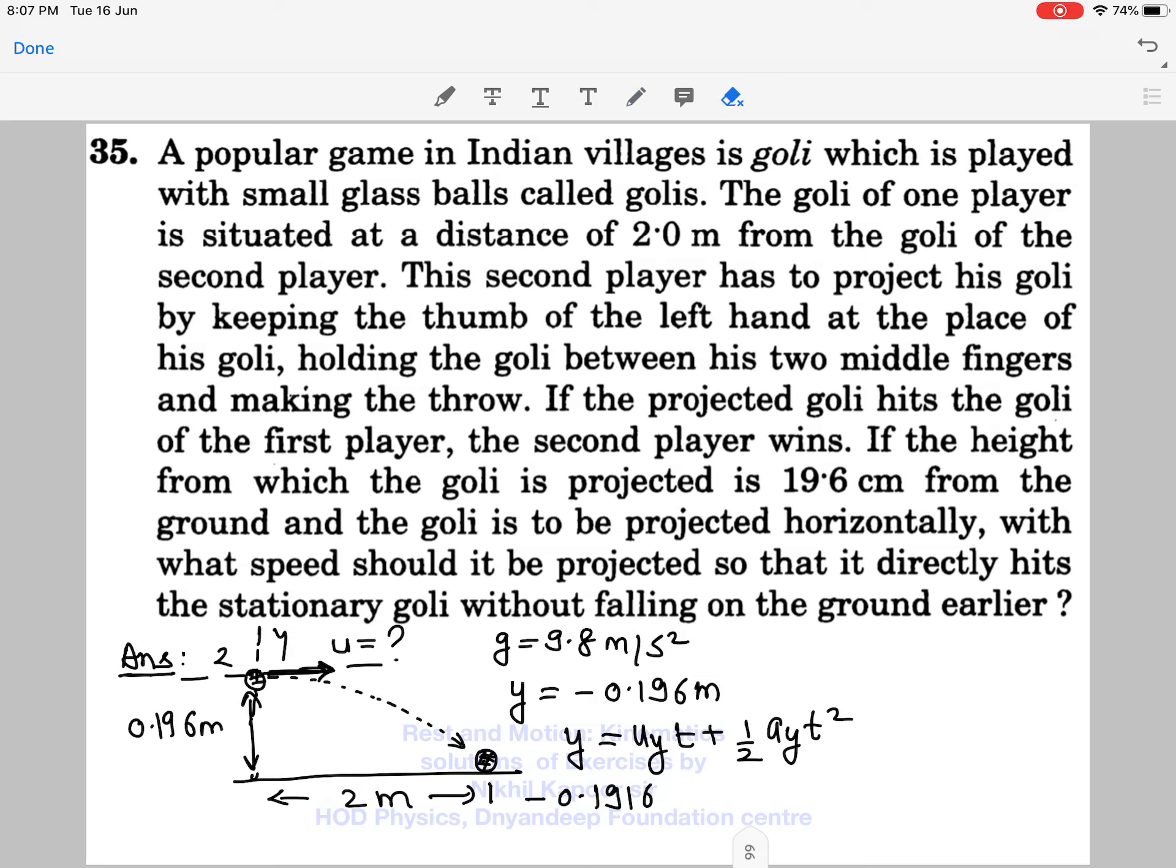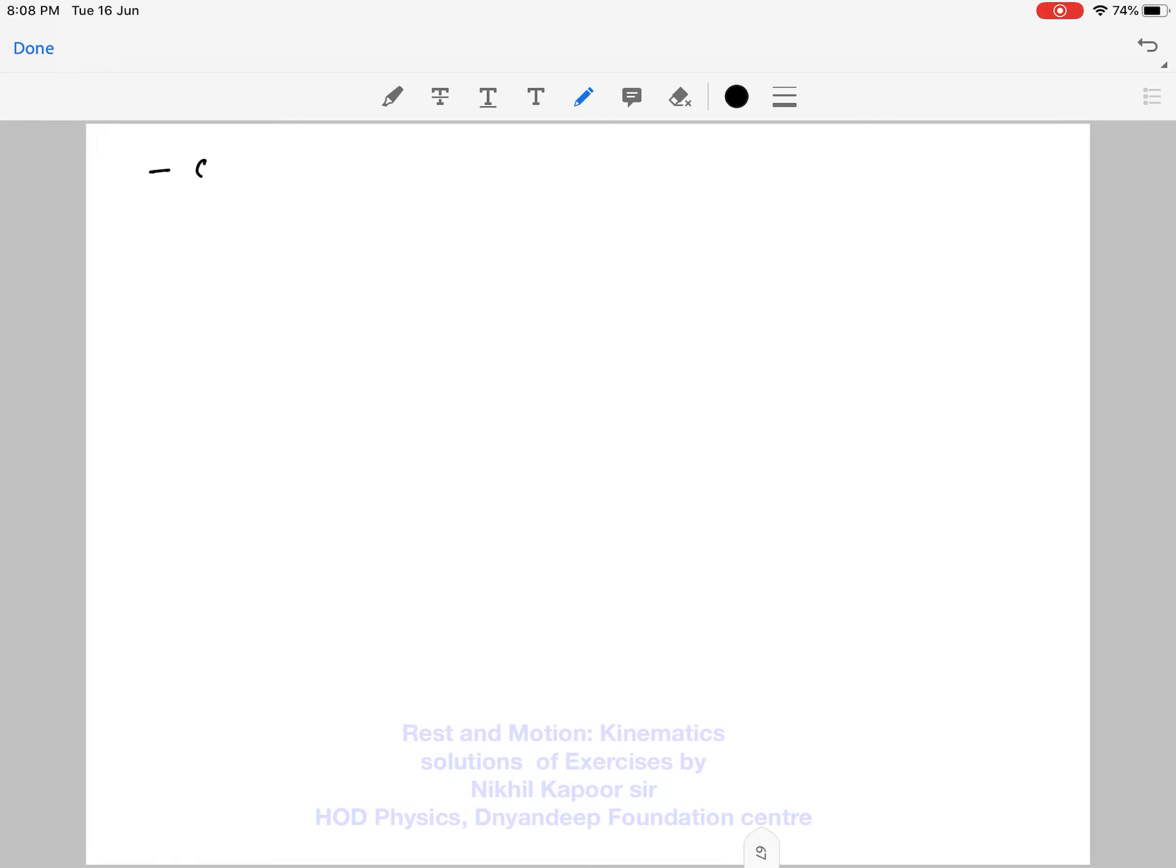As the y coordinate is minus 0.196m, the velocity in y direction is 0 because they said that the goalie is projected only in horizontal direction. It would be better if I take it 9.8 and negative because it is also in downward direction and t².